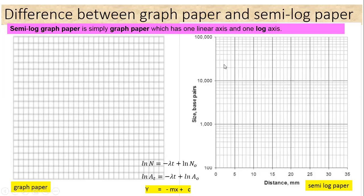Now, in the semi-log paper, one axis is the log axis, but on the conventional graph paper there is no log axis — both the y-axis and x-axis are without a log axis. The difference between these two graphs is that on the simple graph paper, the y-axis also has intervals at a regular distance from one another, with each small region the same distance apart.